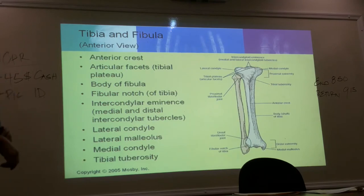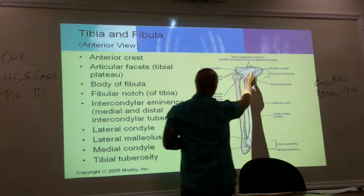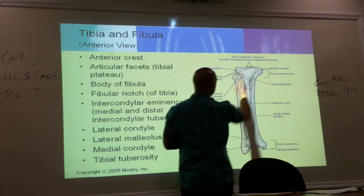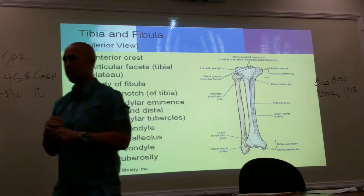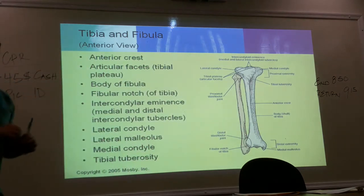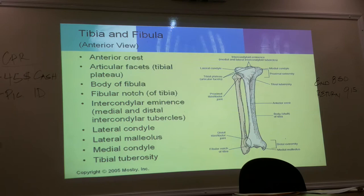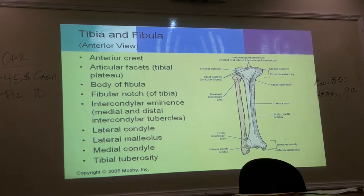On the very top of the tibia, on either side you have smooth surfaces, but in the very middle you have the intercondyloid eminences, also known as tubercles — a very rough surface. Anytime you have a rough surface, there's going to be some attachment there. That's going to be the attachment for your ACL and your PCL — your anterior cruciate ligament and posterior cruciate ligaments attach to those surfaces.